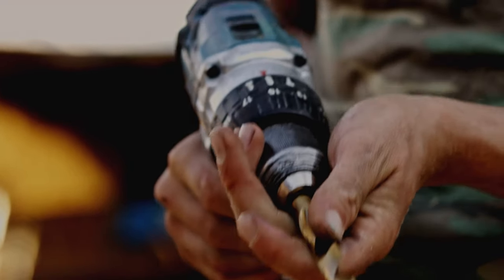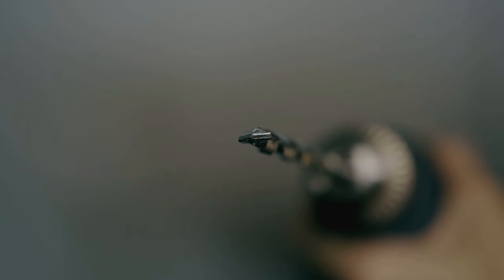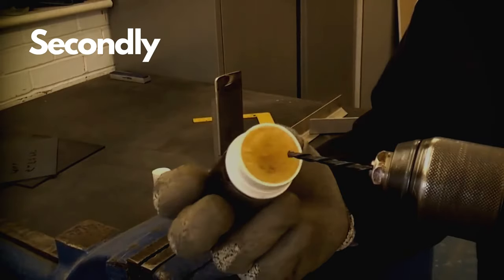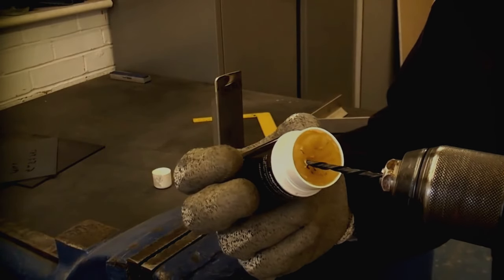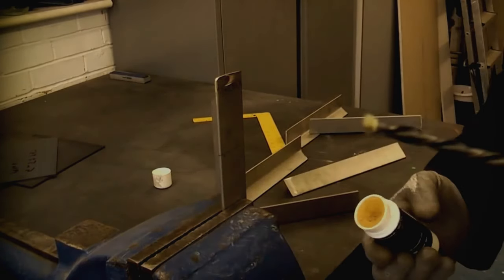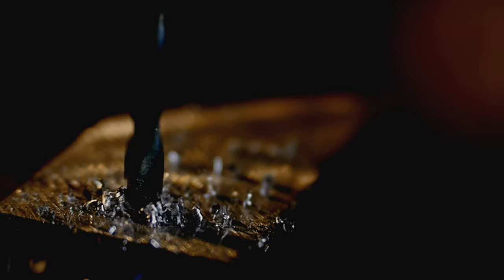Firstly, choose an HSS or cobalt drill bit designed for stainless steel. Secondly, apply a lubricant to reduce heat buildup and keep the drill bit cool. Thirdly, drill slowly and steadily to prevent overheating and ensure accuracy.